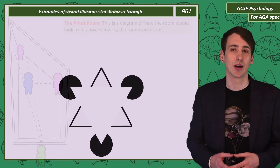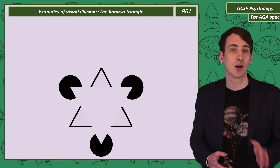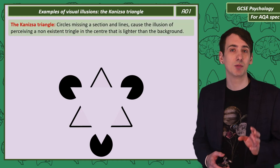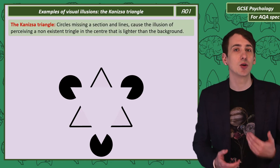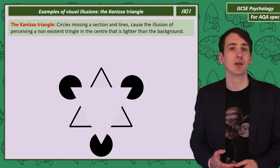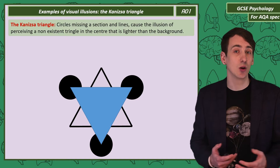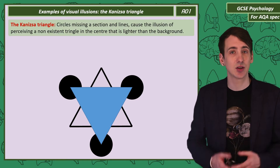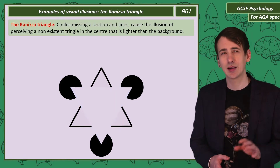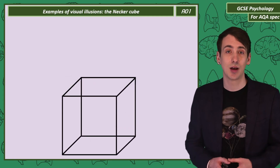We also have the Kanizsa Triangle. This is a set of shapes — three circles with missing sections and three arrow-shaped lines. This produces the illusion of a triangle in the centre of the shapes that appears slightly lighter than the background. And finally, the Necker Cube.